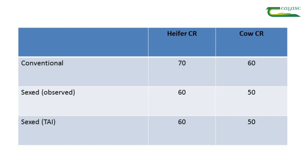This dairy herd wants 30 dairy female calves born, with the remainder being primarily beef calves. So how do we get those 30 dairy females to be born?